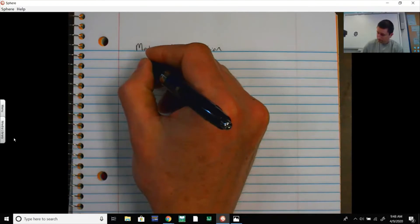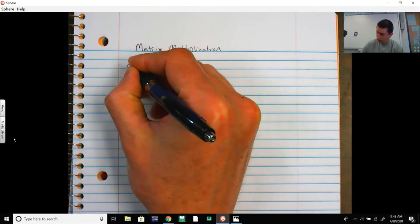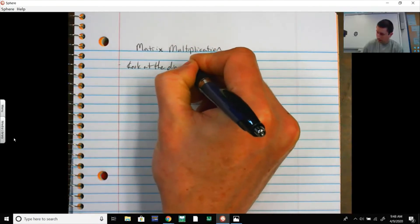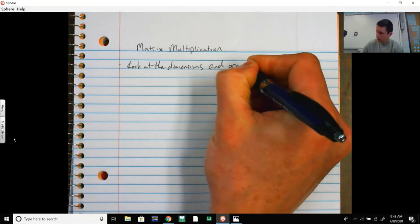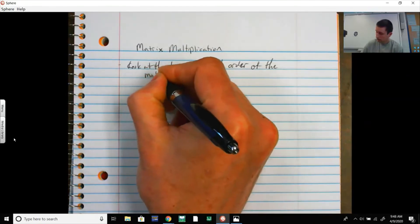Matrix multiplication: you have to look at the dimensions and order of the matrices being multiplied.